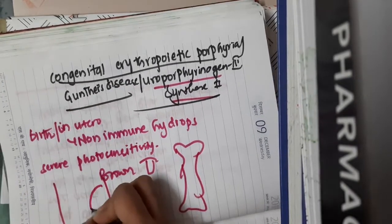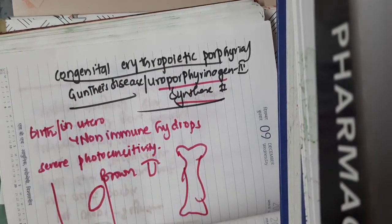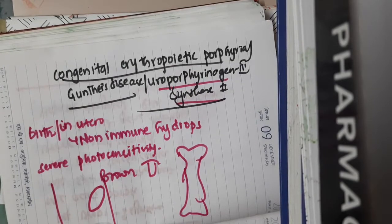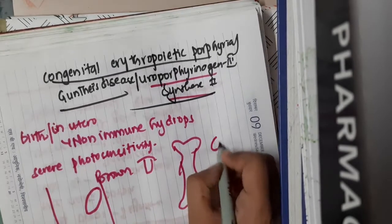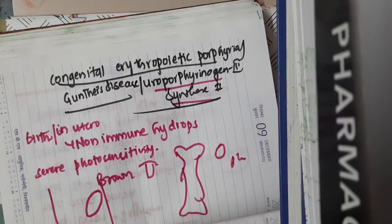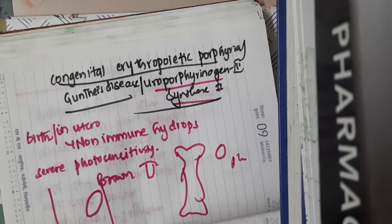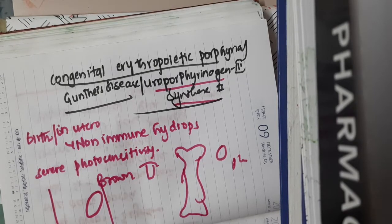Because of the hemolysis, splenomegaly is seen in these patients. In the bone marrow, RBC, and plasma, there is accumulation of porphyrins, especially uroporphyrin-1 and coproporphyrin-1, which accumulate in bone marrow, RBC, and plasma.